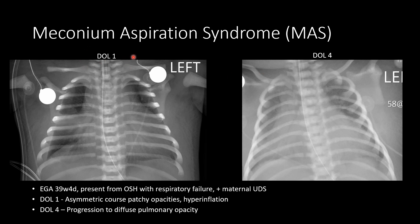Here we have a day-of-life-one case with severe respiratory distress, presented from an outside hospital with respiratory failure, and a positive maternal drug screen. We see coarse asymmetric patchy opacities and pretty large lung volumes on the left side. By day of life four, there is very rapid progression to diffuse opacification of the lung, and this patient did not survive.